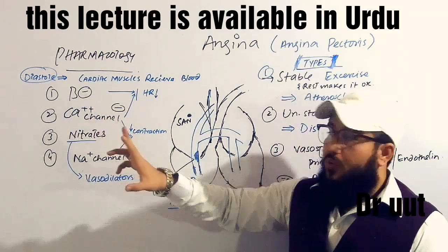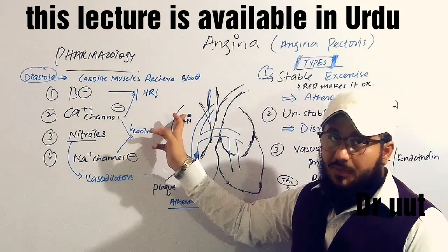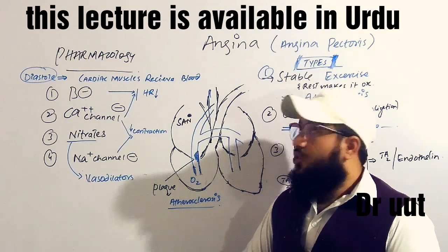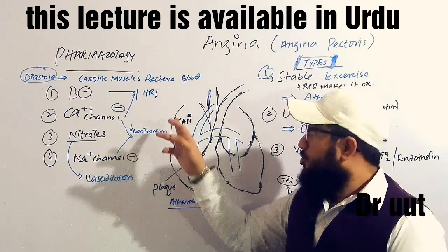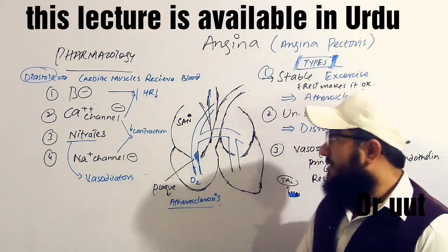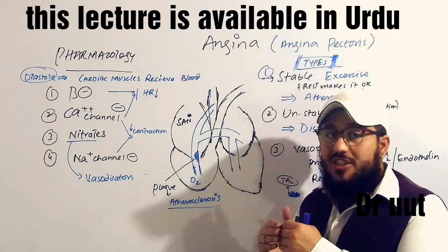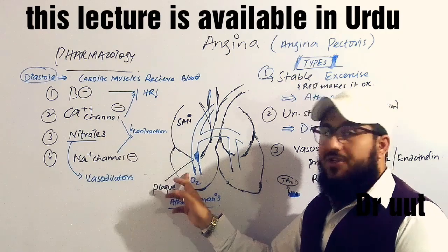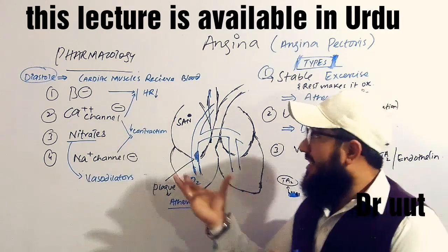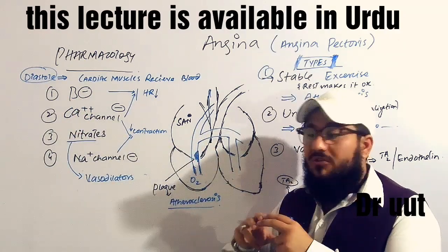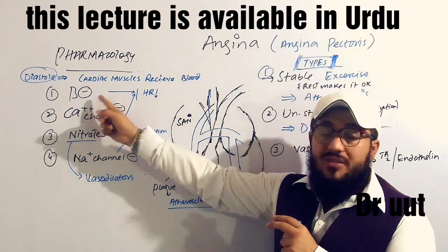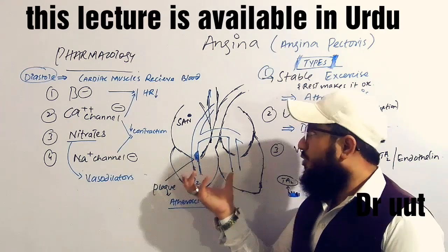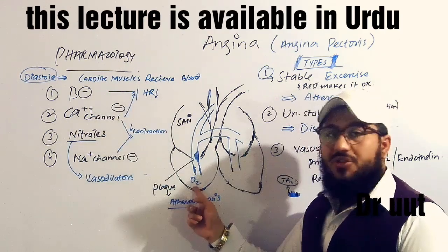Beta blockers decrease heart rate by reducing sympathetic nervous system input to the sinoatrial node, AV node, and the whole heart. By decreasing sympathetic supply, we decrease both contraction and heart rate. The sinoatrial node fires less frequently, creating a longer diastolic time. During this diastole, cardiac muscles receive blood and oxygen, and the pain is relieved.